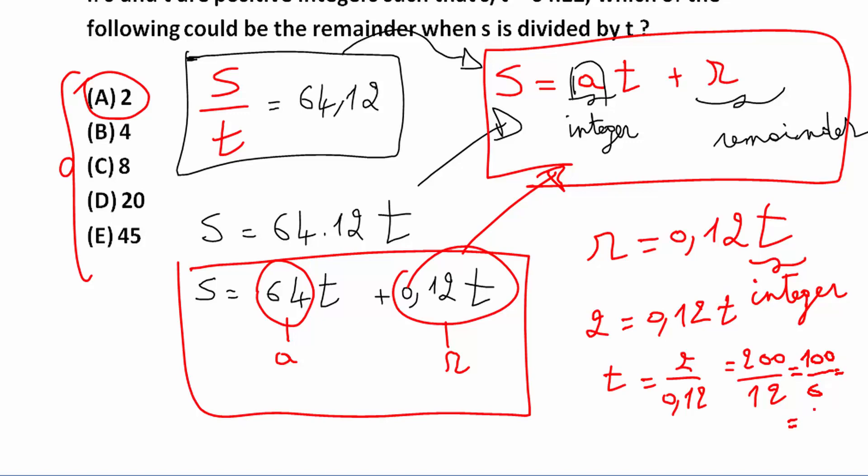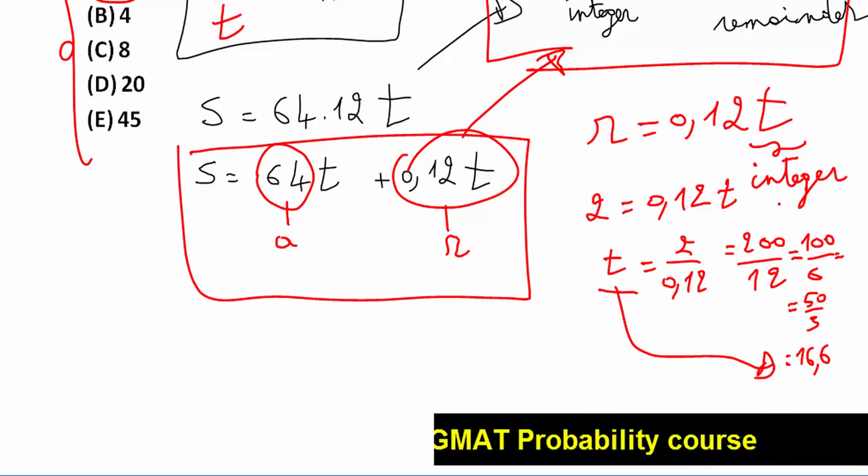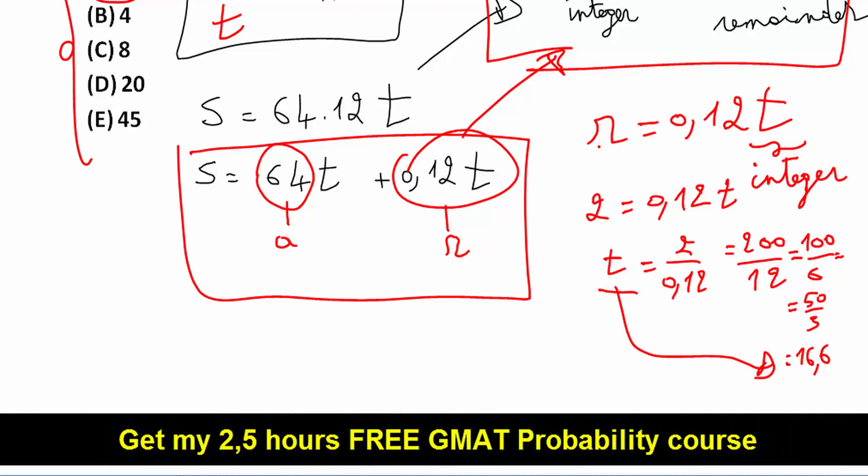It's equal to 50 divided by 3, so it's equal to 16.6. So T here is not an integer. And we know that T is an integer. So if the remainder is 2,